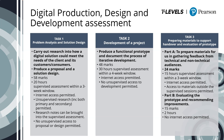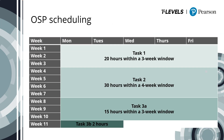Task three: preparing materials to support handover and evaluation of a prototype. This is broken down into two parts. Part A: prepare materials for use in gathering feedback from technical and non-technical audiences — worth 24 marks, completed over 15 hours of supervised assessment within a three-week window. Part B: evaluating the prototype and recommending improvements — worth 15 marks, completed over two hours. There will be one occupational specialism project series per academic year, due to the large amount of content, the synopticity required, and the linear assessment model.